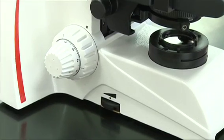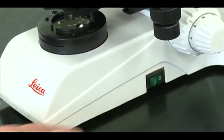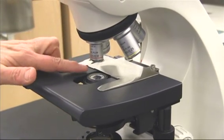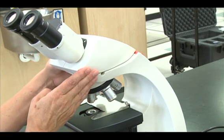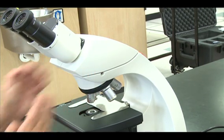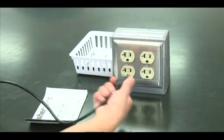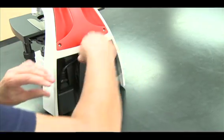Lower the rheostat to its lowest position and turn the power off. Make sure that the condenser is even with the mechanical stage. Make sure that the microscope head is aligned with the body of the scope. Unplug the microscope by the plug and wrap it into the cord holder. Never pull on the cord to disconnect.